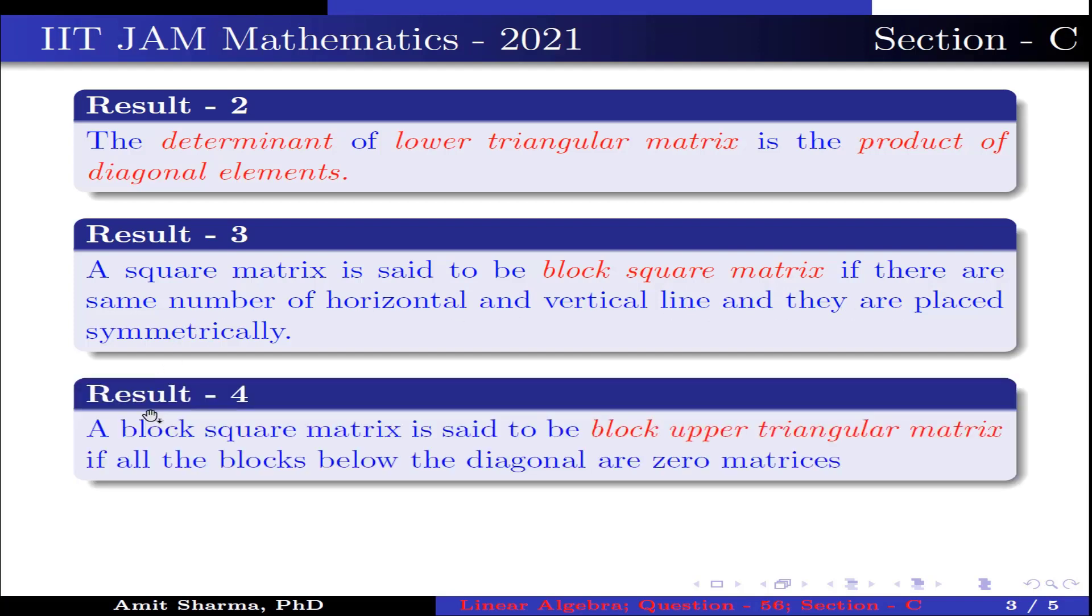Result number 4: A block square matrix is said to be block upper triangular matrix if all the blocks below the diagonal are zero matrix.